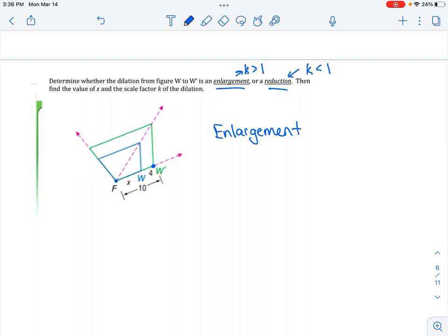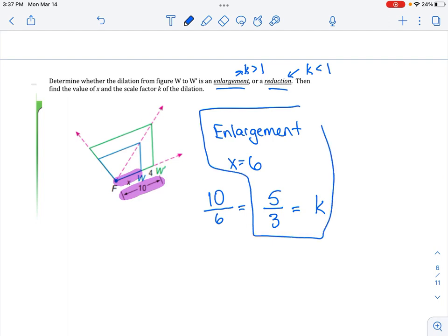which means our scale factor will have to be bigger than 1. To find the X value, you can just take 10 minus 4, and you get 6. And then to find the K value, no matter whether it's a reduction or an enlargement, you always take your whole length. You're just working backwards from what we've been doing. Because this is an enlargement, we put our whole length over 6, and then we just reduce our fraction for our scale factor, and we have our answer.